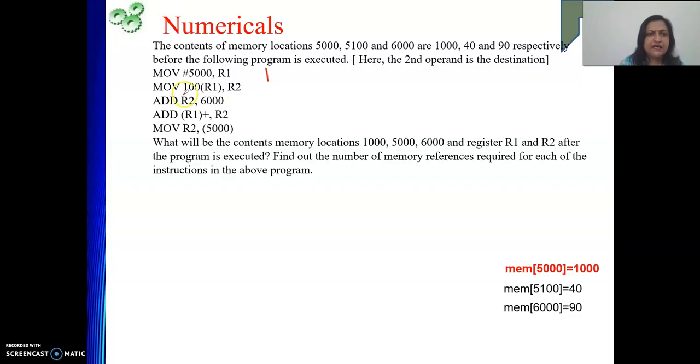Then the next one is index addressing mode. Here operand will be there in the memory. And what is the address of the operand? R1's content plus 100. From that address, data will be moved to R2. So here how many references? Two. One is for instruction fetch. And another one is to fetch the data whose address is 100 plus content of R1.